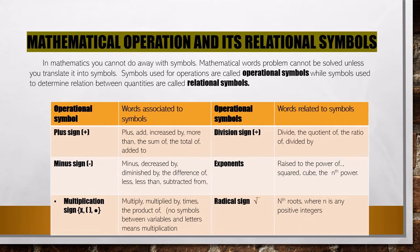I have here a chart of words associated with each operational symbol. For the plus sign, the words are: plus, add, increase by, more than, the sum of, the total of, and added to. For the minus sign: minus, decrease by, diminish by, the difference of, less, less than, and subtracted from. For the multiplication sign: multiply, multiplied by, times, the product of.